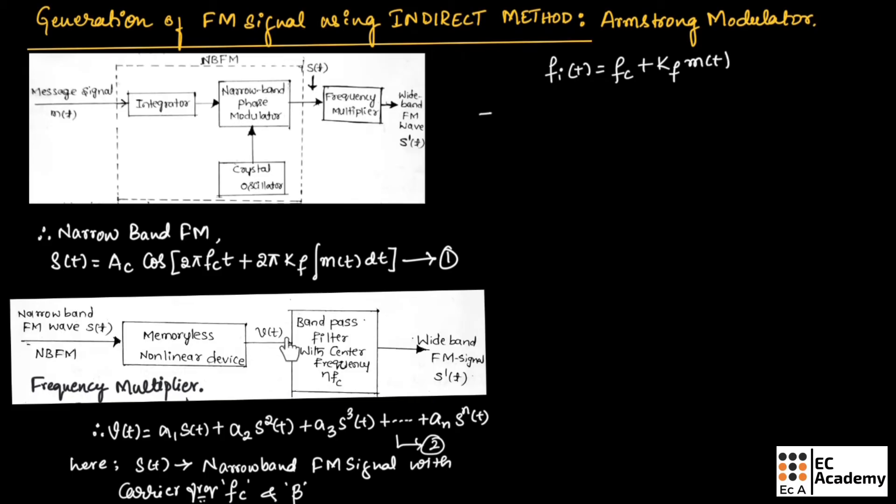When this output of memoryless device is passed through a band pass filter with center frequency n·fc, we will get the required wide band FM signal that can be indicated as S'.